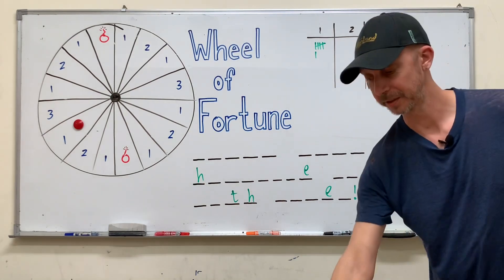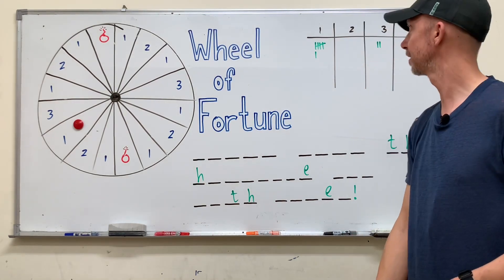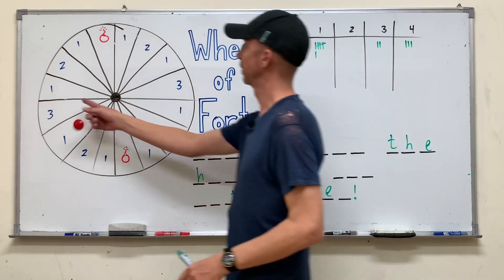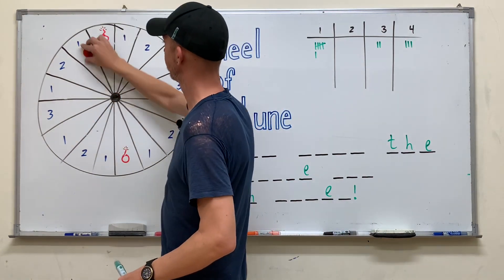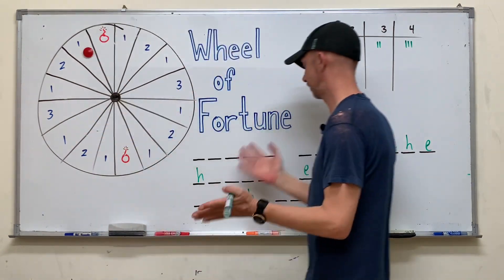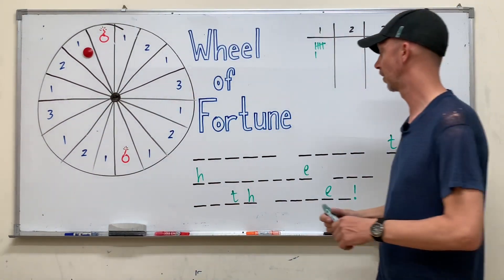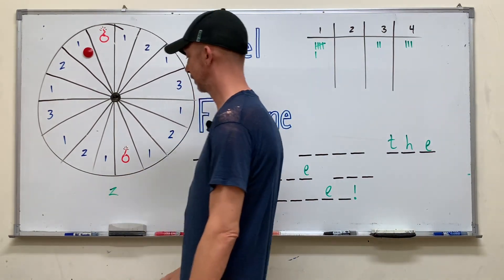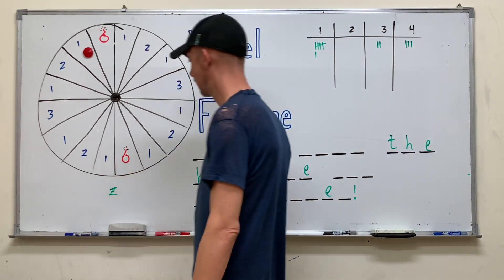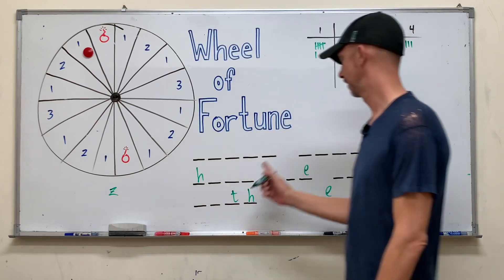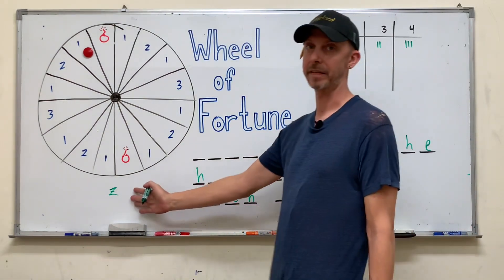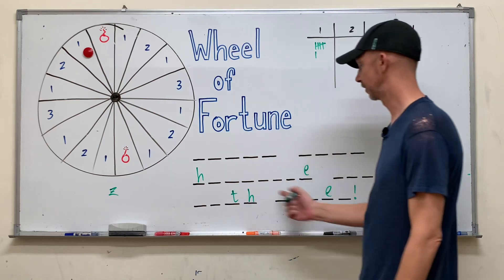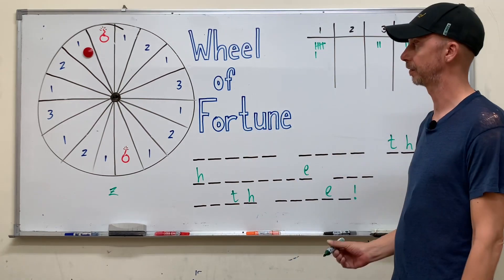Let's roll the dice again — this time it's team one's turn again. They get a four. Let's say they want to guess A. I should also write out that team two guessed Z and it wasn't there, so we need to keep track of wrong guesses as well, not only the letters that have been chosen correctly.